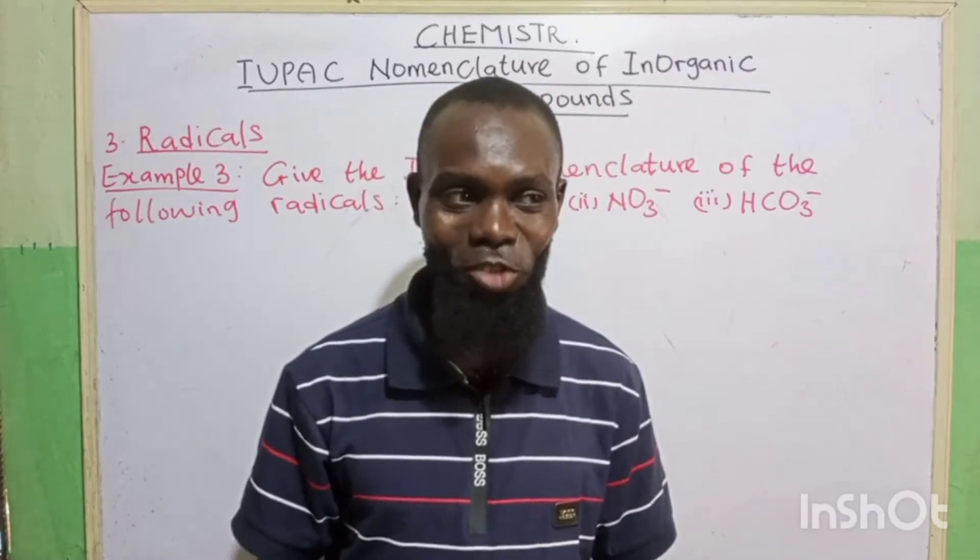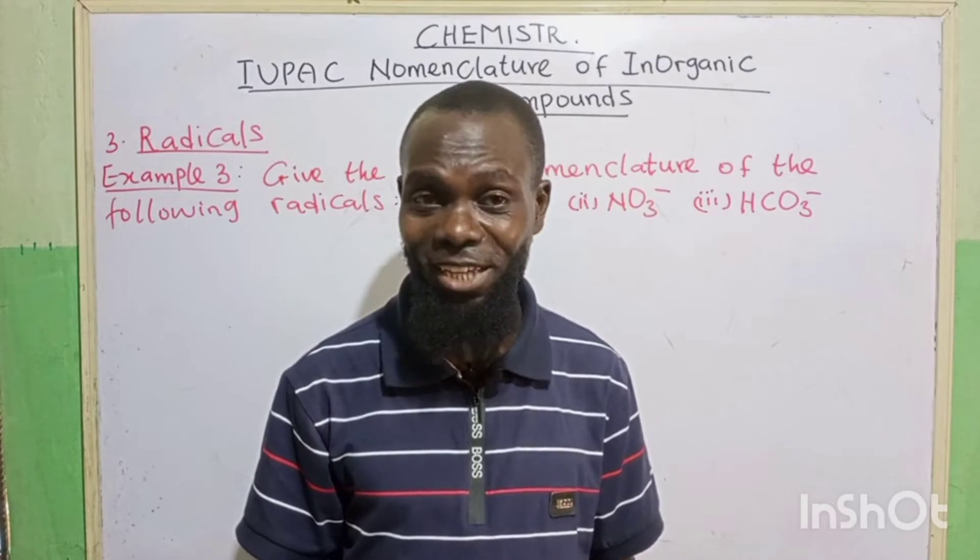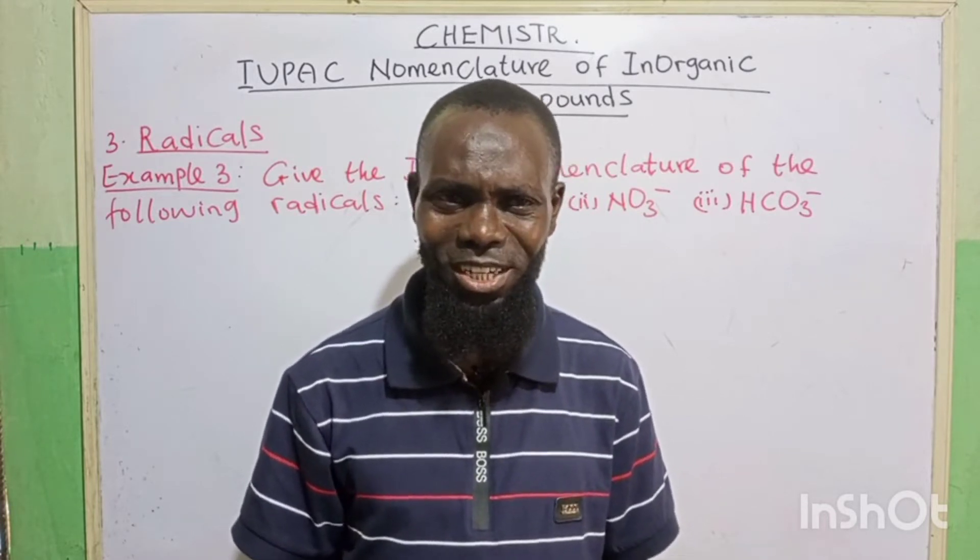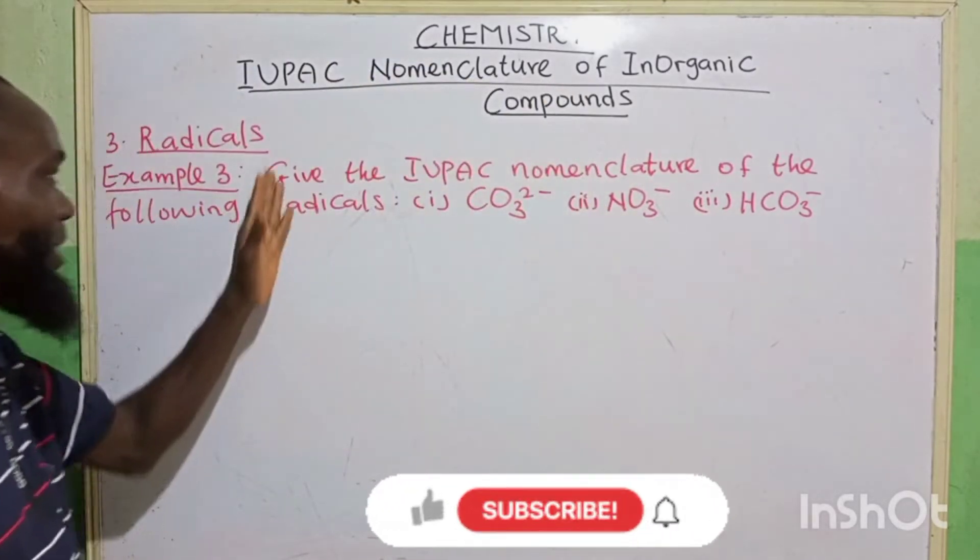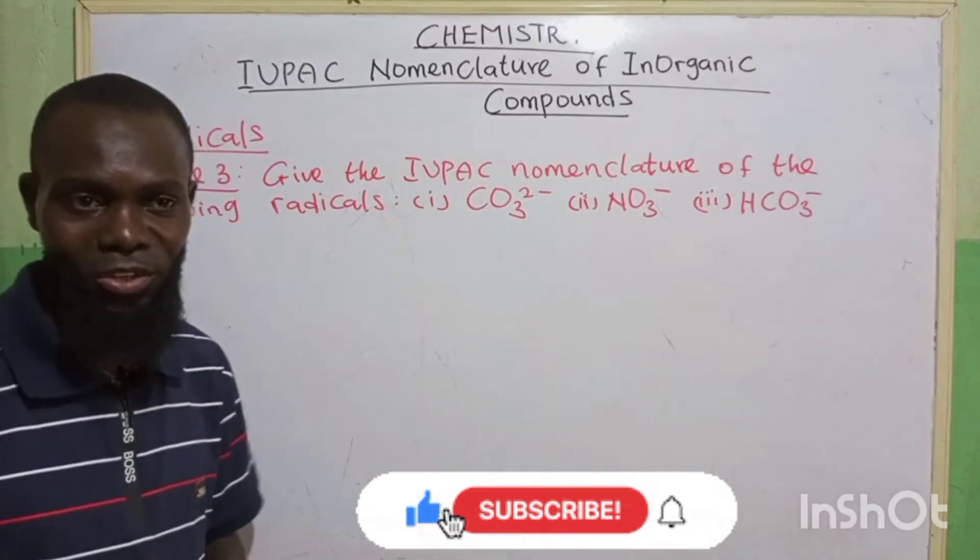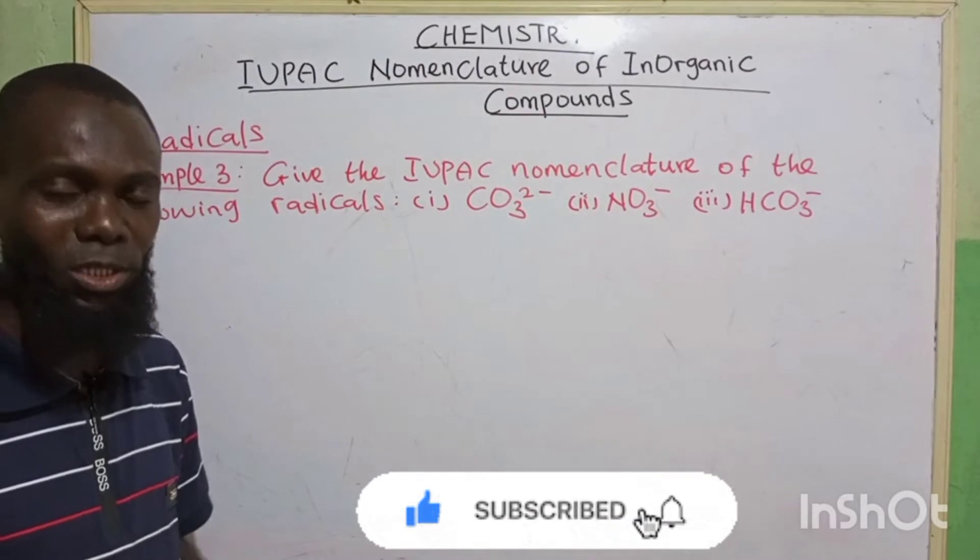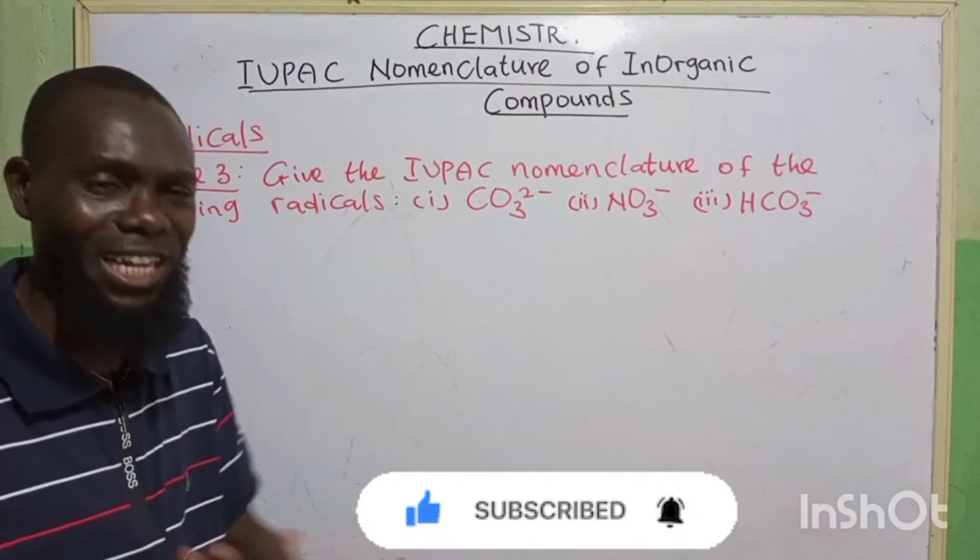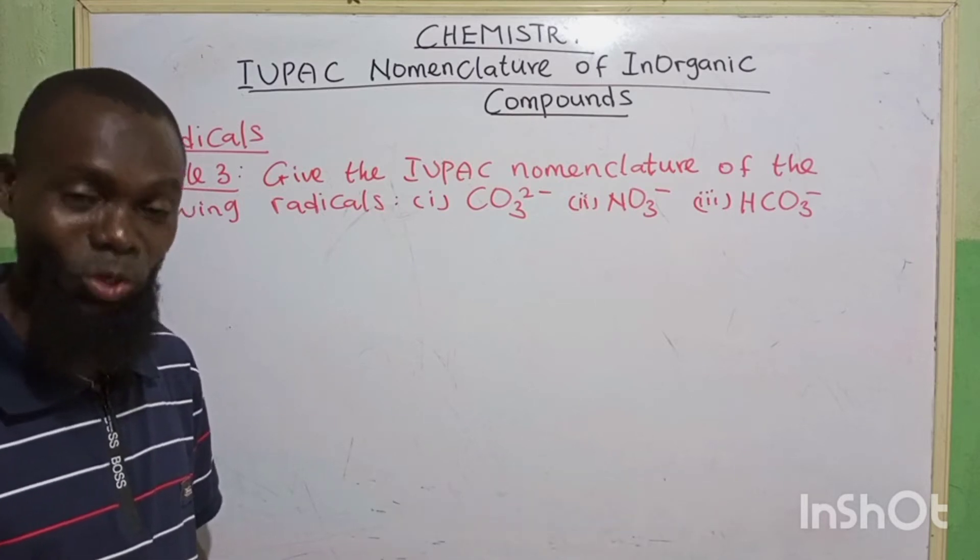Good day viewers. Welcome back to our chemistry class. Today is going to be the last class for our IUPAC nomenclature. And we are going to be looking at the third aspect, which is the radicals. We have discussed about the radicals before, which are the combination of two or more atoms to have a unique valency. How do we now get to their names is what we are going to look at today. So let's dive in.